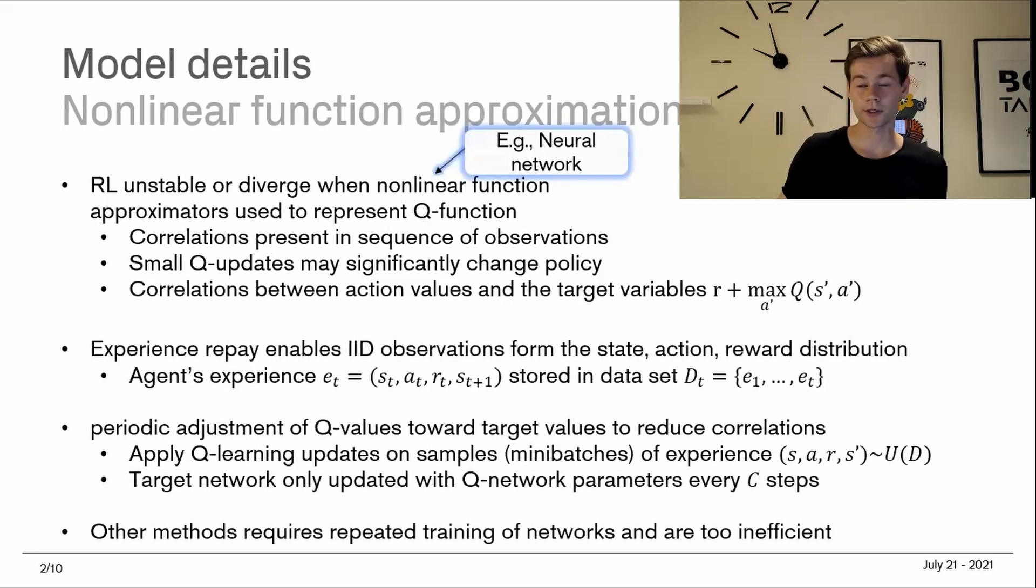Moving on to nonlinear function approximators, which is the next topic associated with this paper that is something new and quite good. Reinforcement learning has been unstable or even diverging when nonlinear function approximators are used to represent the Q value function. The consequence is you can't really apply something like neural networks to the Q value function without it being severely affected. This is for three main reasons. First, correlations are present in the sequence of observations.